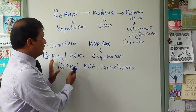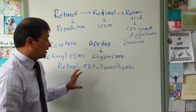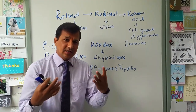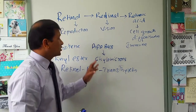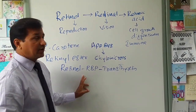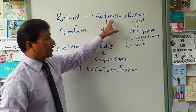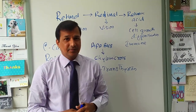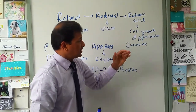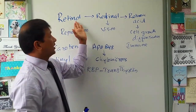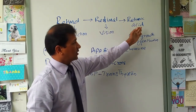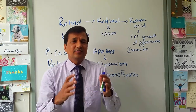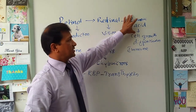Peripheral tissues that need vitamin A express receptors and internalize retinol. Reproductive organs take up retinol directly for reproduction. Rod cells in the retina convert retinol to retinaldehyde for the vision cycle. Peripheral epithelial cells and immune cells convert retinol to retinaldehyde and further to retinoic acid for immune mechanisms.